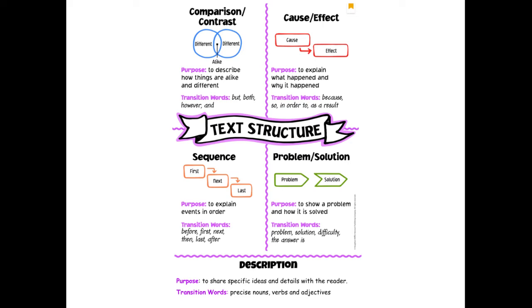Then we have problem solution. The purpose of this text structure is to show a problem and how that problem is or can be solved. You may see transition words like problem, solution, difficulty, the answer is, and there are more that you may see as well.